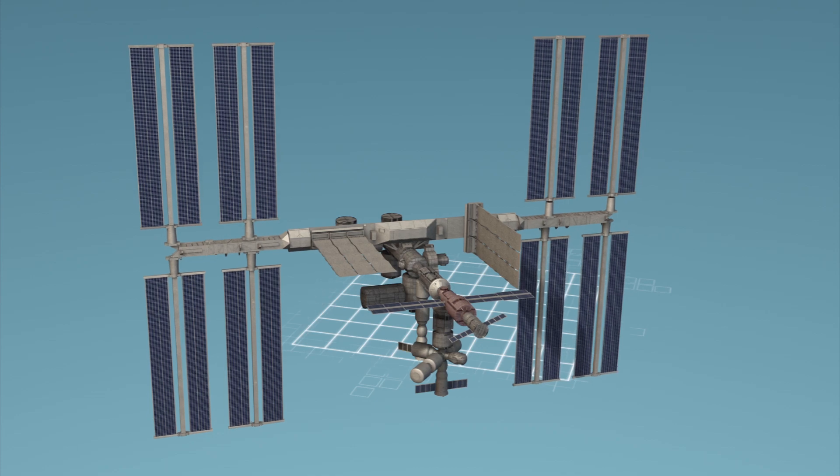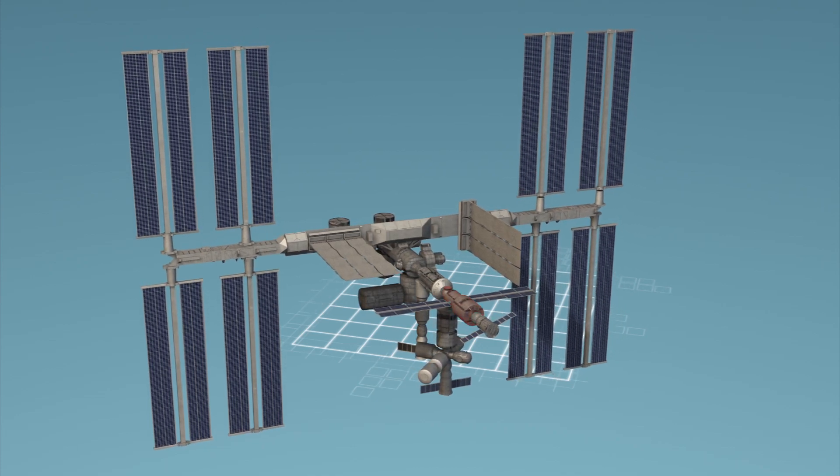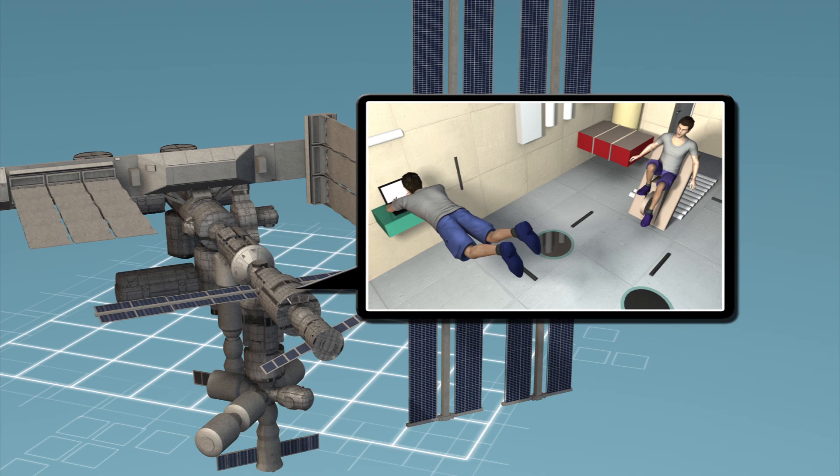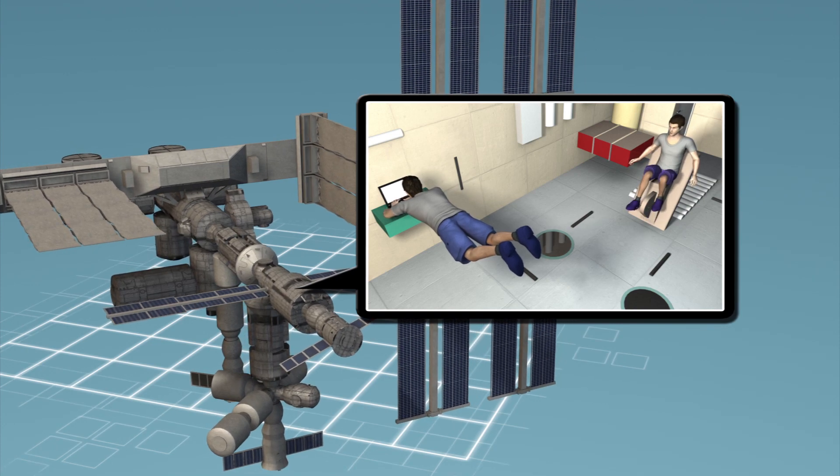Russian modules make up about half of the station, including the Zvezda service module which houses crew and critical systems including communications, electrical distribution, and the station's life support systems.